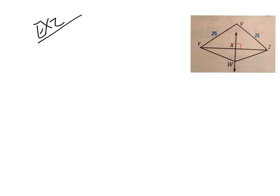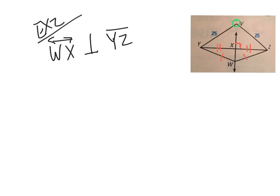So we know that if WX is the perpendicular bisector, this line equals this line, and this line equals this line, and it tells us we have the 90 degrees. Now there's a point V out here not physically touching ray WX, but from V to Y it's 25 and from V to Z it's 25. So those two measurements are the same.